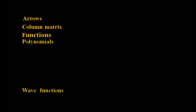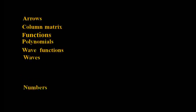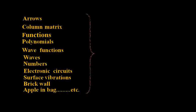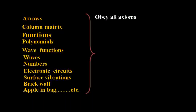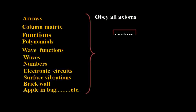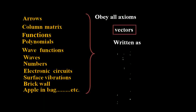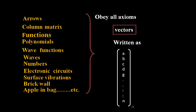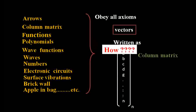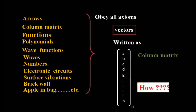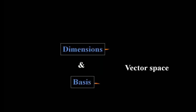Arrows, column matrices, functions, polynomials, wave functions, surface vibrations, etc. — these things follow all the axioms we discussed earlier, and we can write them as column matrices. To write these things as column matrices, we first need to learn about the dimensions and basis of a vector space.